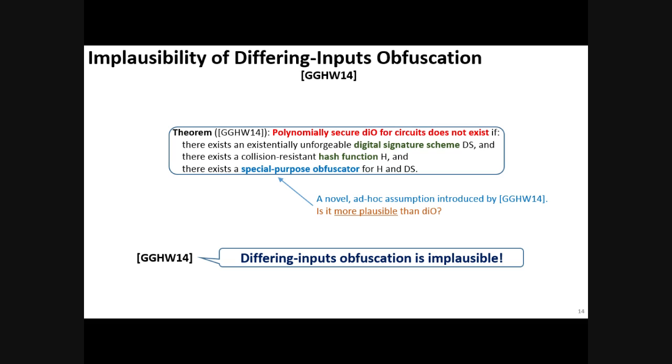Let us recall the result by Garg et al. They showed that polynomially secure differing input obfuscation for circuits does not exist if there exists a digital signature scheme and a hash function and some special purpose obfuscator for these two schemes, the signature scheme and hash function.